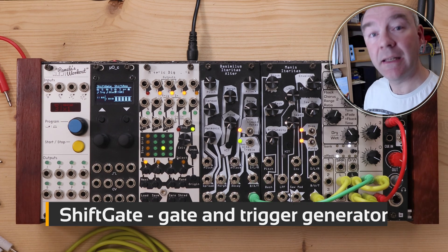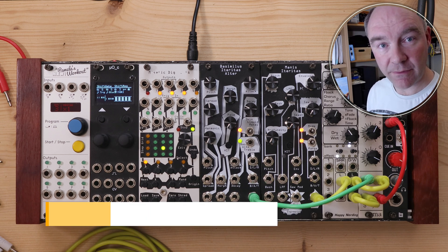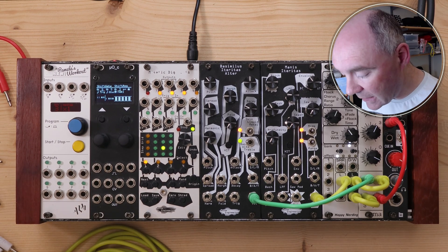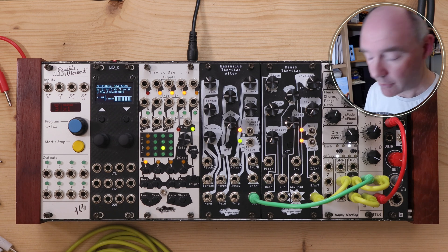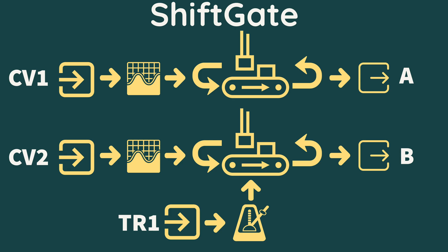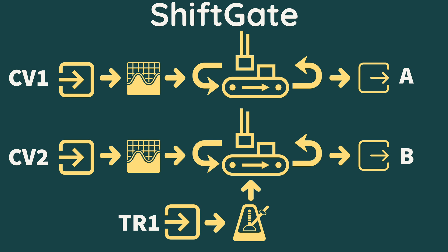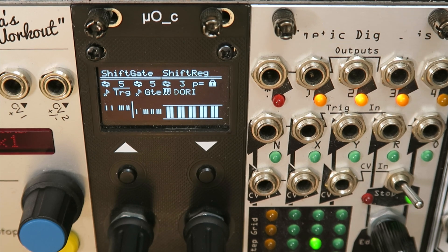Now that we've looked at the basic sequencers, let's look at the generative or feedback shift sequencers. The first is Shift Gate, loaded in the left hemisphere. Shift Gate generates two parallel gate streams or trigger streams. It uses a feedback shift register where the output is fed back into the input, and the CV inputs one and two are sampled for outputs A and B to generate bits into the register. This feedback shifting is used to generate new values constantly — it generates random values by sampling the input and XORing that with what's in the register.